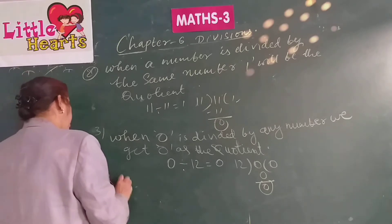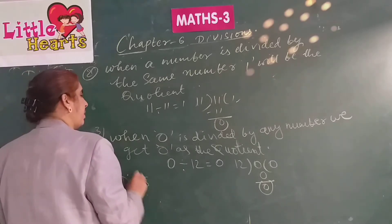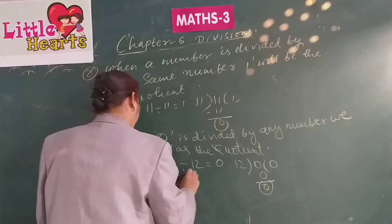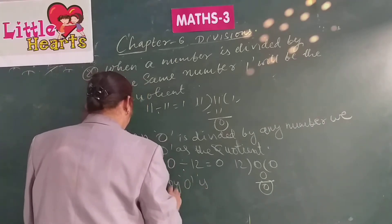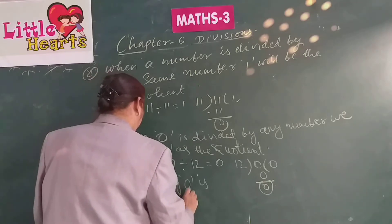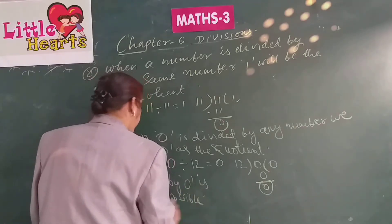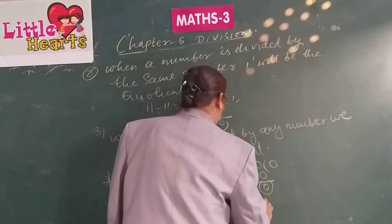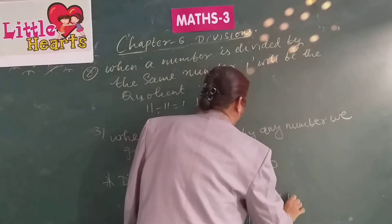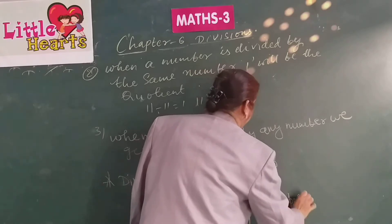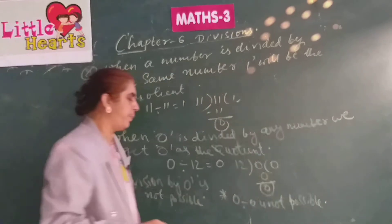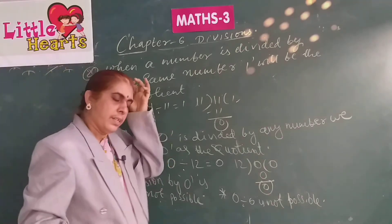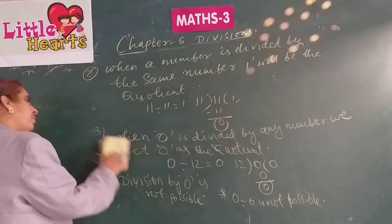Division by 0 is not possible. And 0 divided by 0 is also not possible. We cannot divide any number by 0, and 0 divided by 0 is not possible. These are the properties of division.